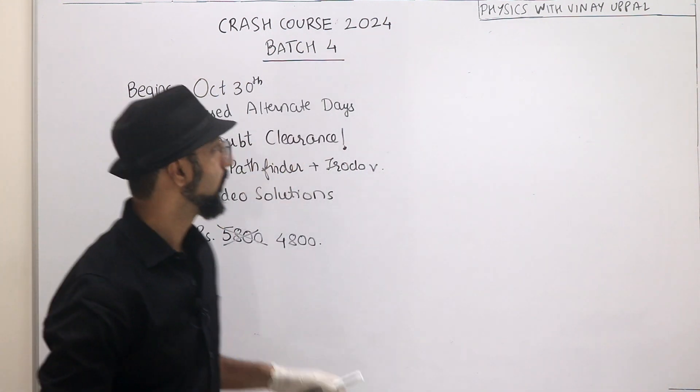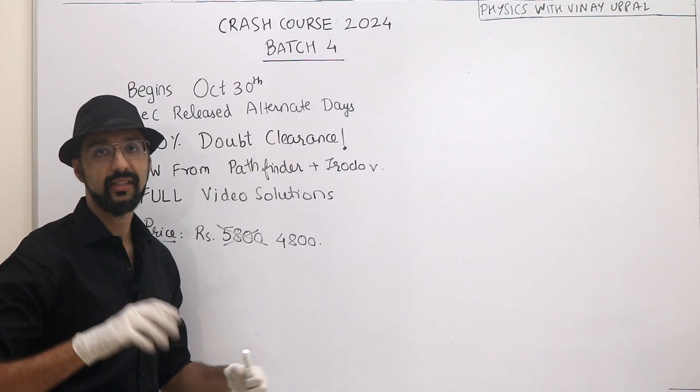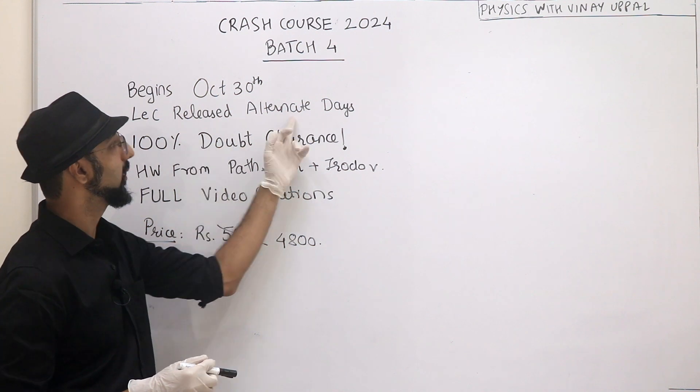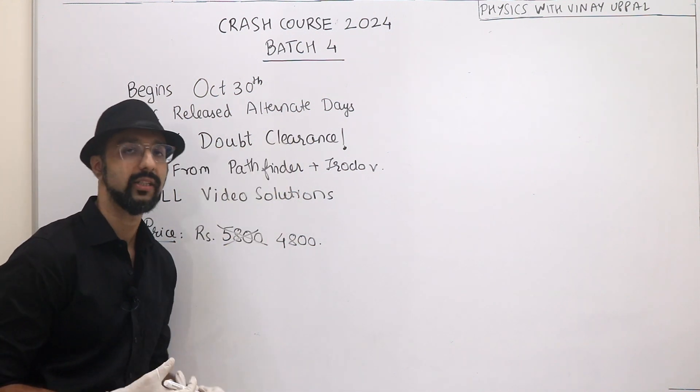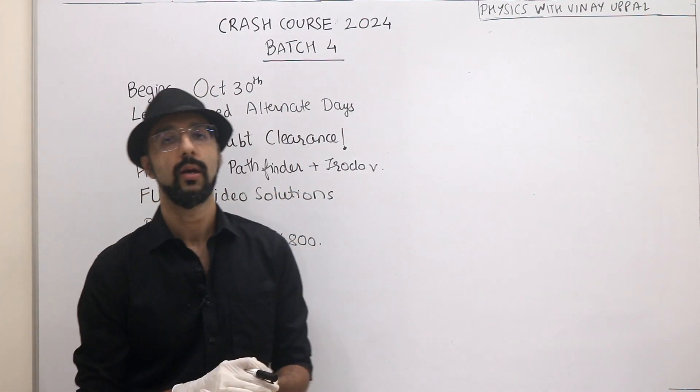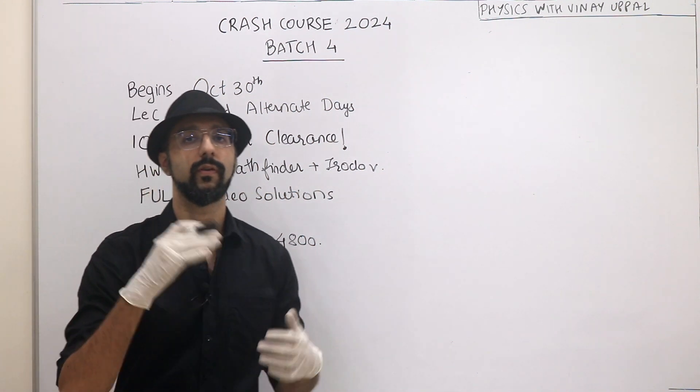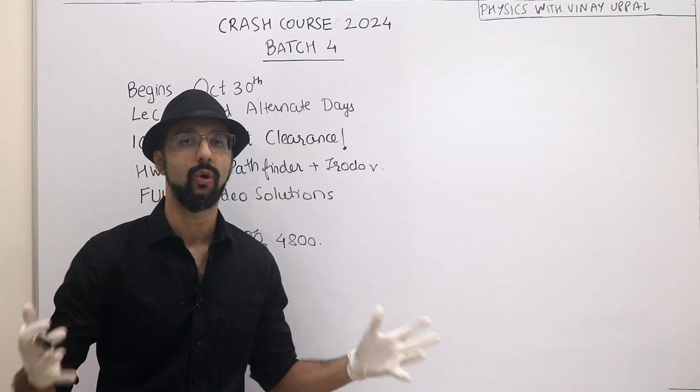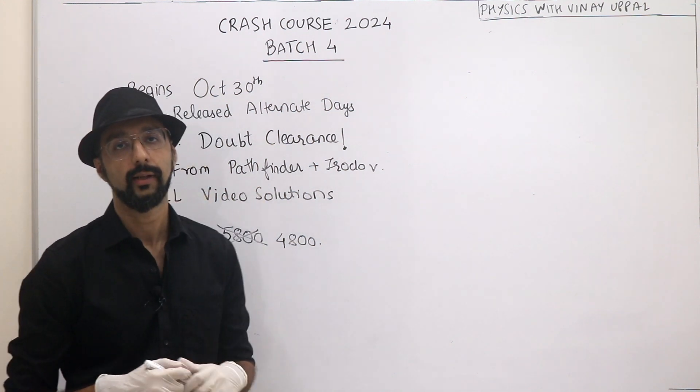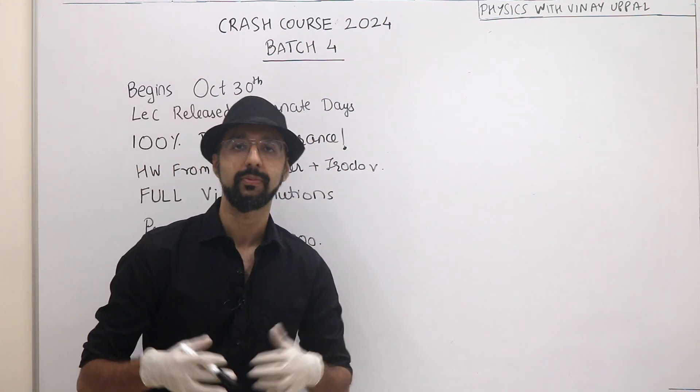This batch starts from October 30th Monday, and every alternate day lectures are released. We will start off with Newton's Law of Motion Part 1, then Wednesday and Part 2 Friday Circle of Motion and so on. The full schedule is on the course page, all links are in the description.